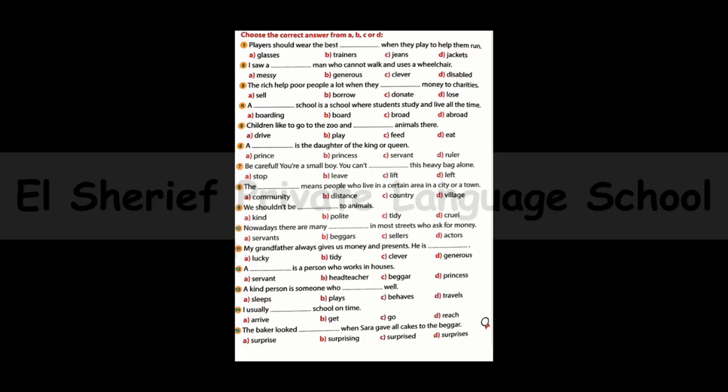Number two: I saw a man who cannot walk and uses a wheelchair. The options are: messy, generous, clever, or disabled. The answer is: I saw a disabled man who cannot walk and uses a wheelchair.